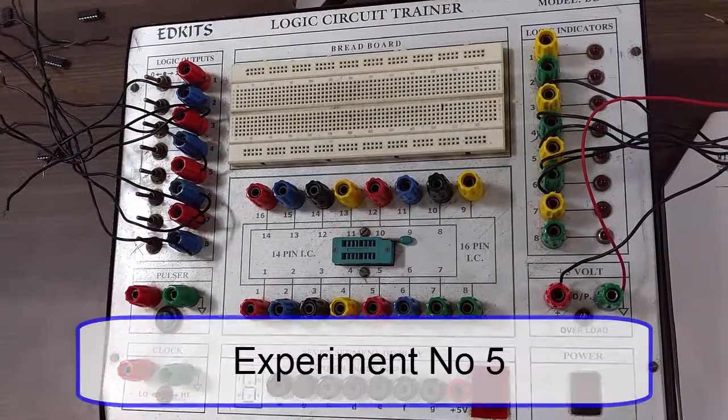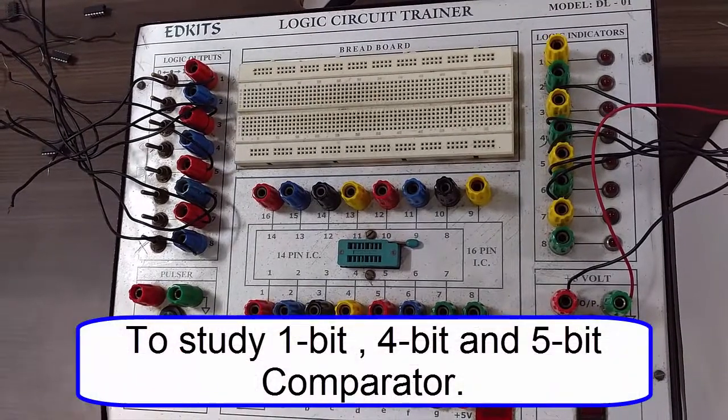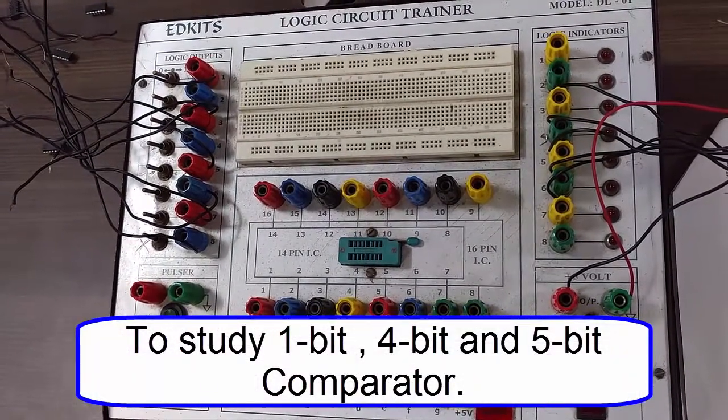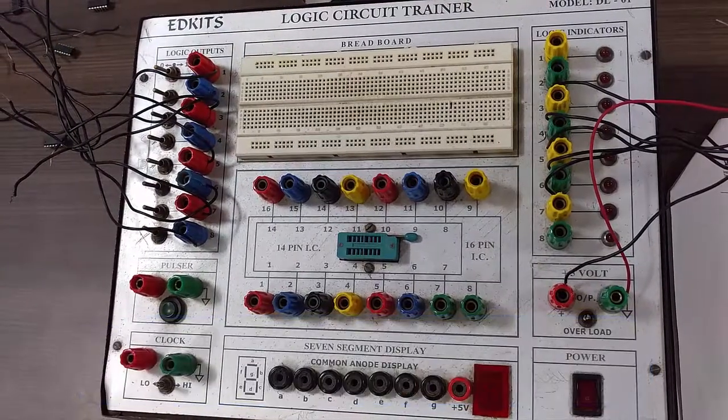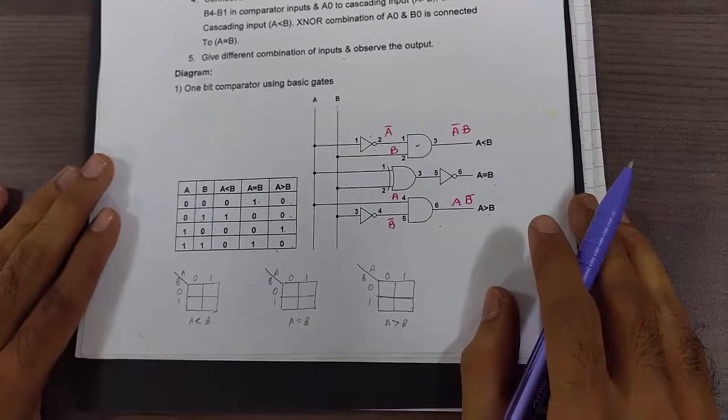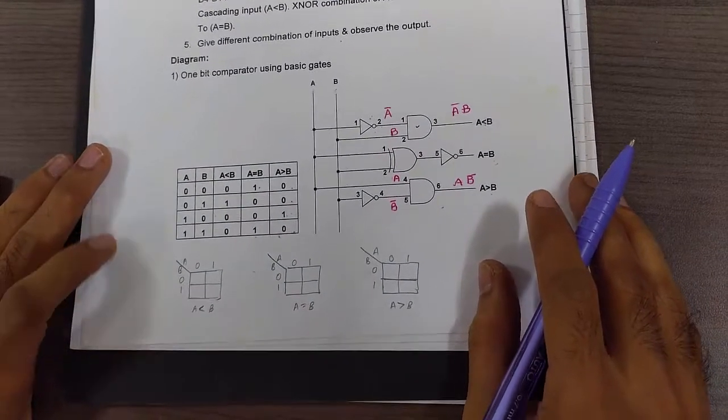Hello everyone. Welcome to Digital Electronics Lab. Today we are going to perform experiment number 5 titled 1-bit, 4-bit and 5-bit comparator using IC7485 and basic logic gates. So now let us first understand the designing of 1-bit comparator using basic gates.